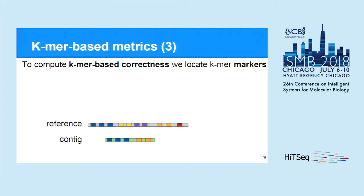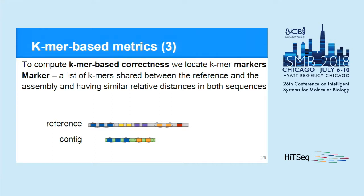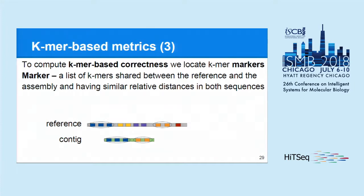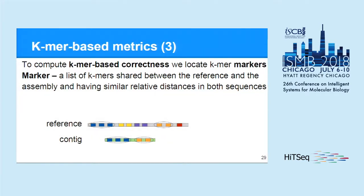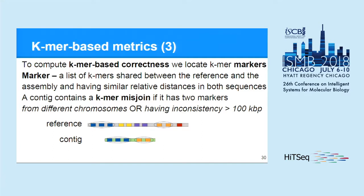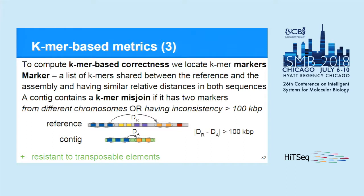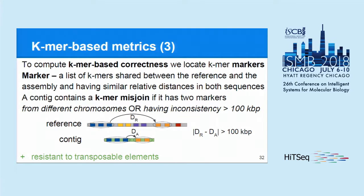The second metric is K-mer based correctness. To compute it, we locate K-mer markers, which are lists of consecutive K-mers shared between the reference and the assembly, having the same or very similar relative distances in both sequences. We say that a contig or scaffold contains a K-mer misjoin if it has two markers related to different chromosomes of the reference, or a large inconsistency in their relative distance between reference and contig. A key benefit of this metric compared to classic misassemblies is that it is resistant to transposons, because transposons are repeated sequences and contain no unique K-mers.